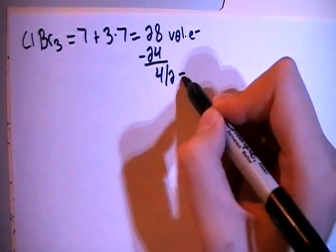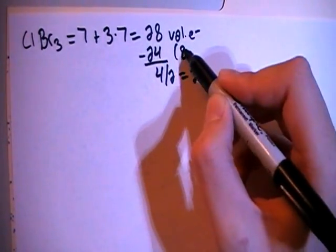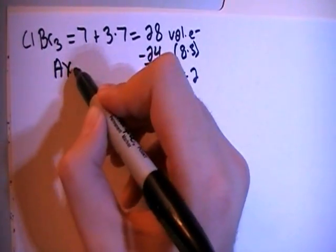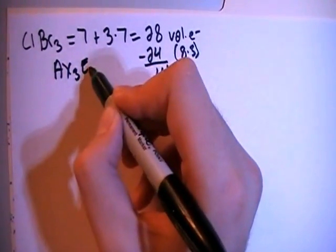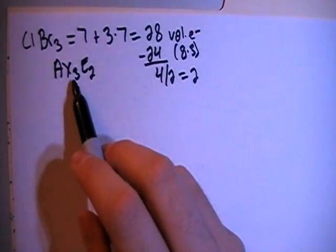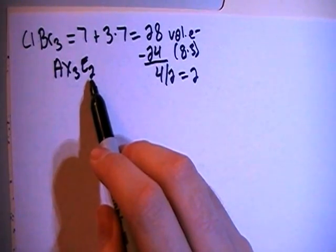Divide that by 2 to give you 2 non-bonding pairs and 24 is equal to 8 times 3 so that means that this is going to be an AX3E2 structure meaning there's a central atom, 3 peripheral atoms and 2 non-bonding pairs of electrons on the central atom.